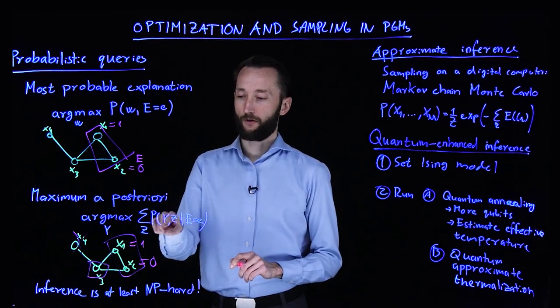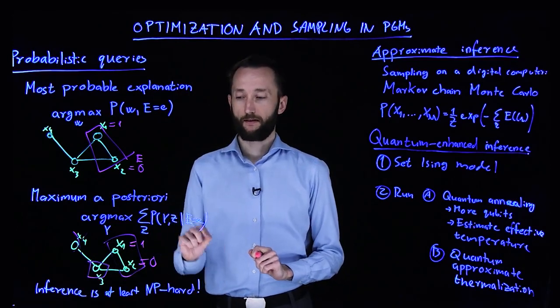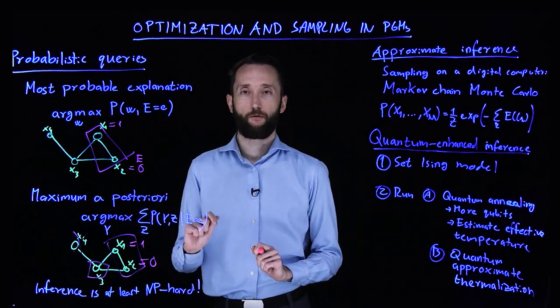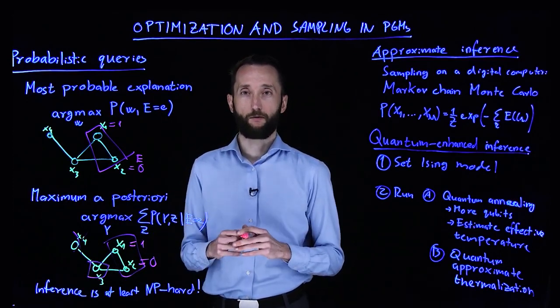So you are only interested in just some subset. So you marginalize over those variables that you are not interested in. You are only looking for the optimal configuration over the subset that you are interested in.